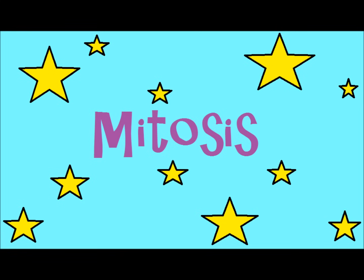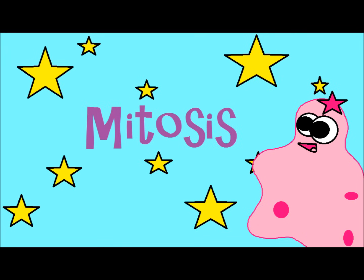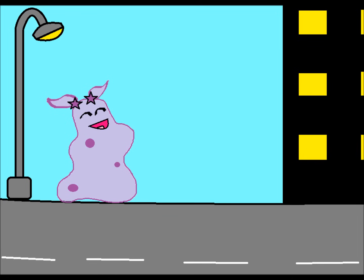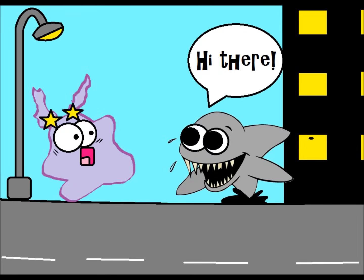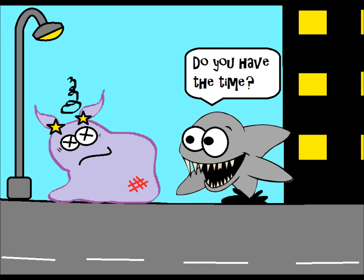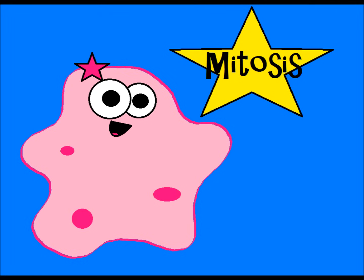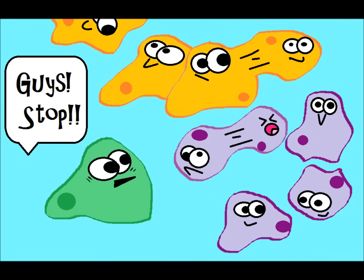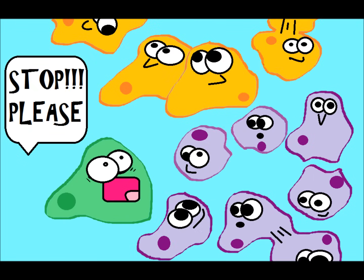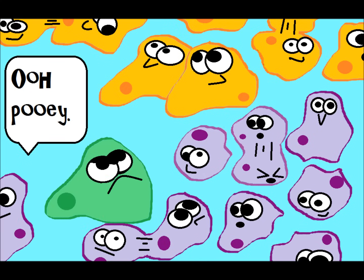Mitosis is very important in order to generate new cells, which can help with growth. And also, if you damage your cells — if you're walking down the street and you have some kind of accident and you skin your knee — you're going to need to repair those damaged cells; you're going to need to be able to do mitosis to make those new cells. The thing is, you don't want your cells to always be doing mitosis, because if they're always dividing, then they're not carrying out their actual function. And that's a problem.